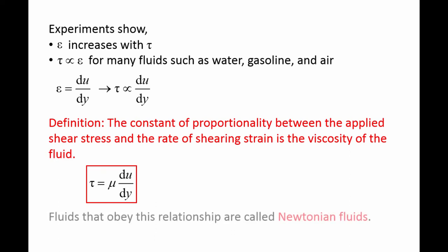Fluids that obey this relationship are called Newtonian fluids. The SI units of viscosity are Newton seconds per meter squared, and the BG units are pound force seconds per feet squared.